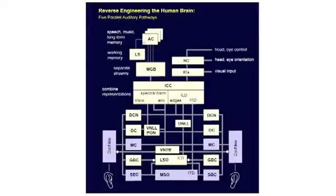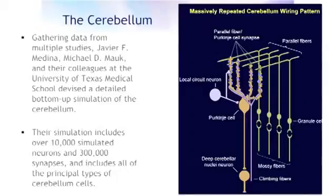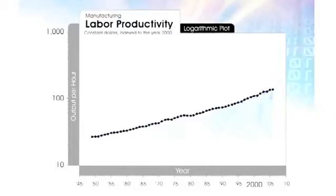Where will we get the software? Some critics say software is stuck in the mud. But we are learning more and more about the human brain. Spatial resolution of brain scanning is doubling every year. The amount of data we're getting about the brain is doubling every year. And we're showing that we can turn this data into working models and simulations of brain regions. There are about 20 regions of the brain that have been modeled, simulated, and tested — the auditory cortex, regions of the visual cortex, the cerebellum where we do skill formation, slices of the cerebral cortex where we do our rational thinking.